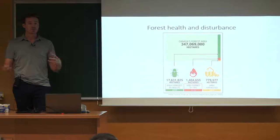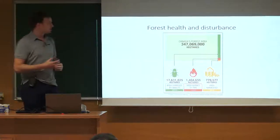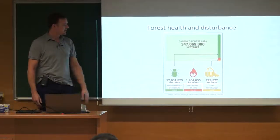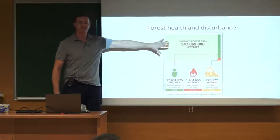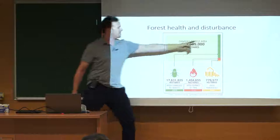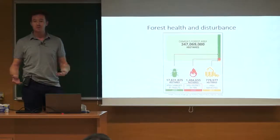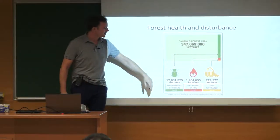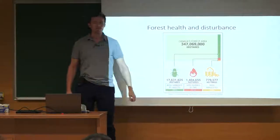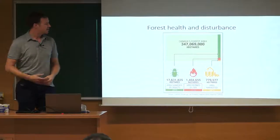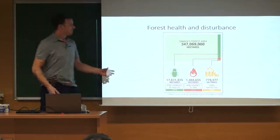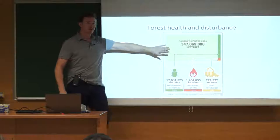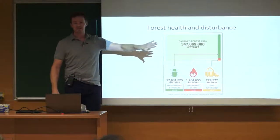These forest landscapes are shaped by disturbances — any event that resets the successional stages of a forest. Within Canada, we've got just under 350 million hectares of forest land. This little column shows disturbances annually affecting the forest: insect outbreaks at about 18 million hectares, fire at one and a half million, and forest management — generally clear-cut logging — under one million hectares.